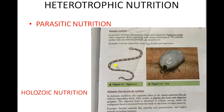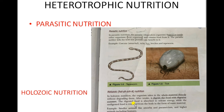Next, holozoic nutrition. 'Holo' means entire. In this type of nutrition the organism takes the whole food material directly into them without digesting it externally. The entire food is digested inside the body of the organism. The digested food is absorbed to release energy, and the undigested food is removed from the body as fecal matter. Examples range from amoeba to human beings.